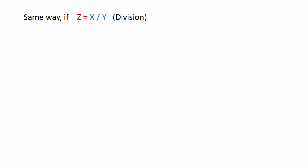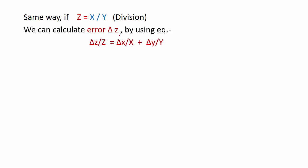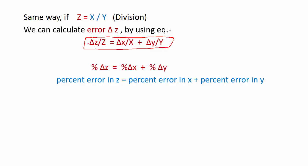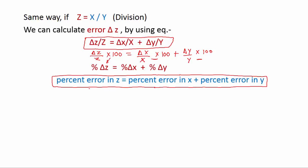In the same way, if the new quantity z is the division of x and y, we can calculate the error delta z using the same formula: delta z over z equals delta x over x plus delta y over y. And the same way, if you multiply both sides by 100, you can write the percentage error formula.